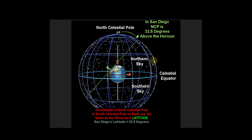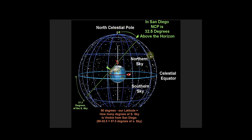We can say the altitude of the north celestial pole equals the observer's latitude. San Diego's latitude is 32 and a half degrees, therefore in San Diego the north celestial pole is 32 and a half degrees above the horizon. We also see some of the southern sky — to find how much, all we have to do is subtract our latitude from 90 degrees. In San Diego, 90 minus 32 and a half gives us 57 and a half degrees of the southern sky visible.